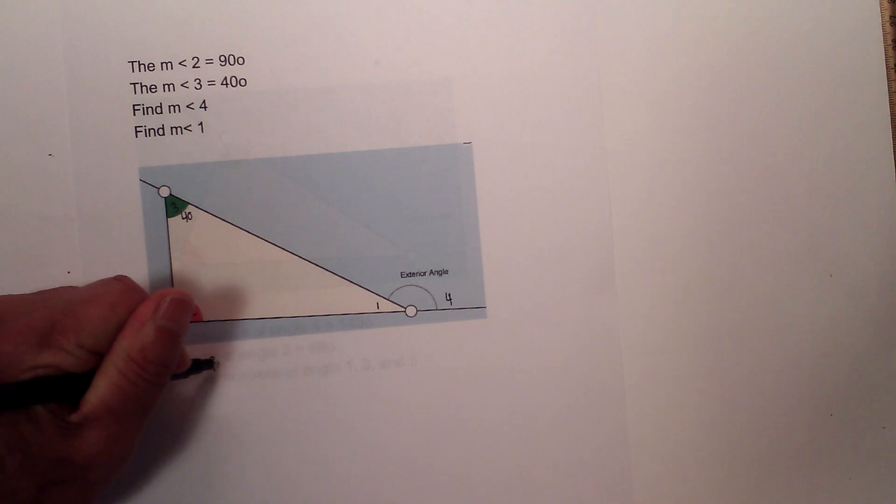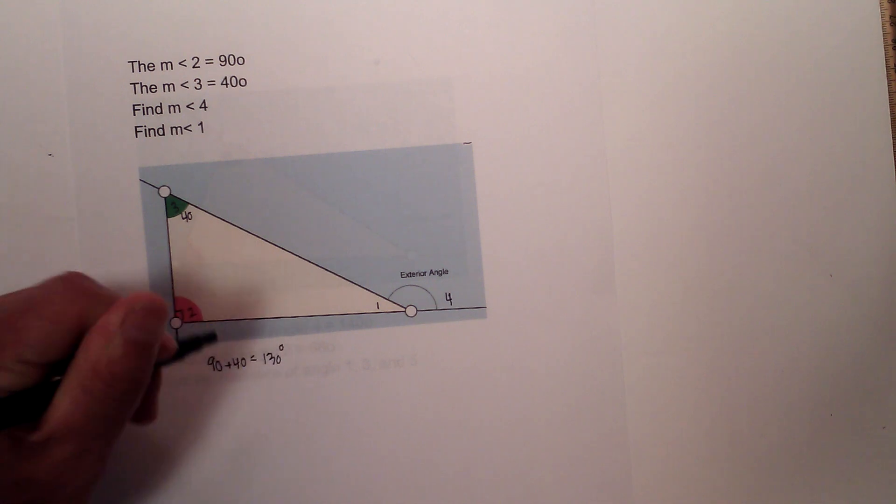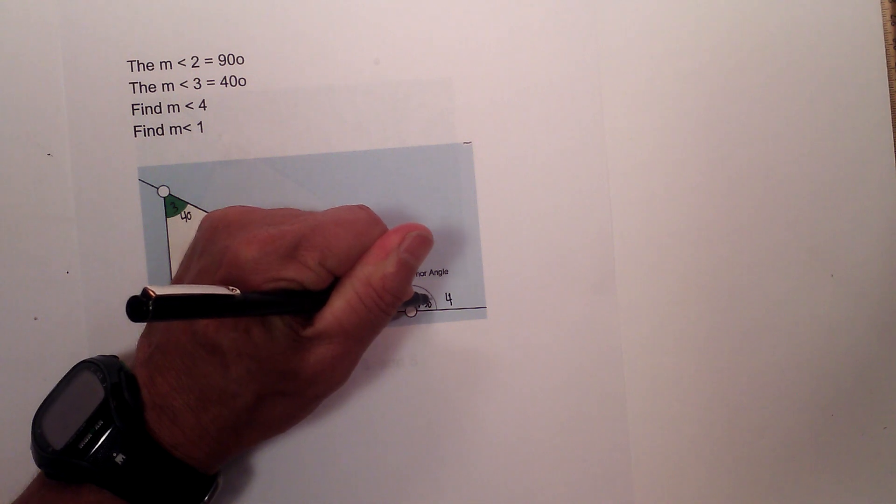We know that 4 is equal to the two interior remote angles added together. Since 2 is 90 degrees and 3 is 40 degrees, we will add these two together and that is 130 degrees equals angle 4. So this would be 130 degrees.